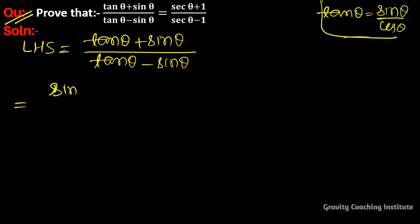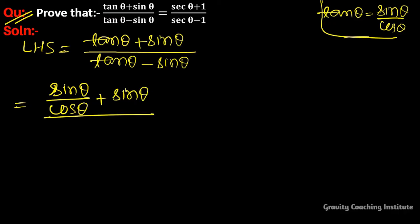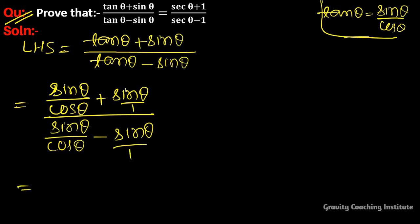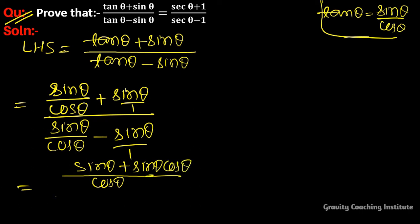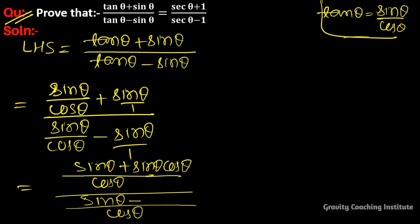Substituting tan θ = sin θ/cos θ, we get (sin θ/cos θ + sin θ)/(sin θ/cos θ - sin θ). Taking the common denominator cos θ, the numerator becomes sin θ + sin θ·cos θ and the denominator becomes sin θ - sin θ·cos θ.